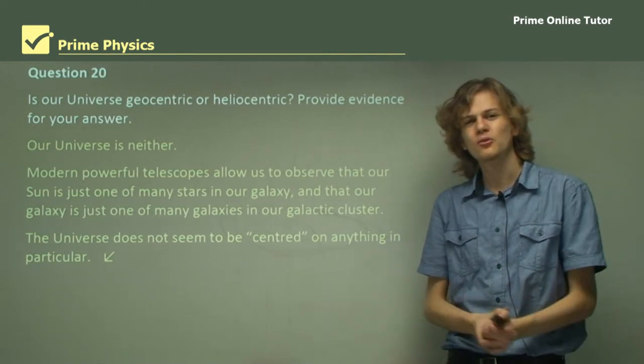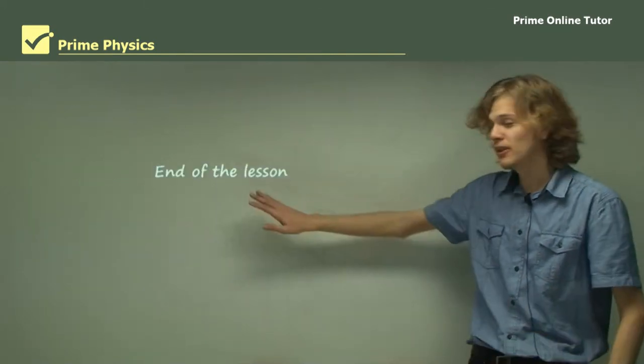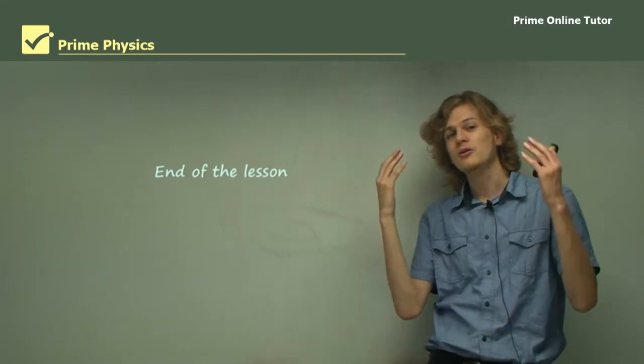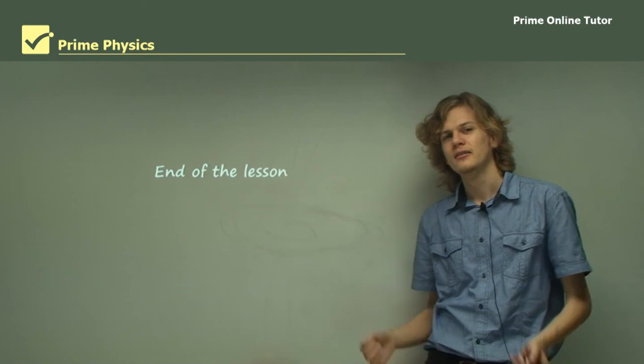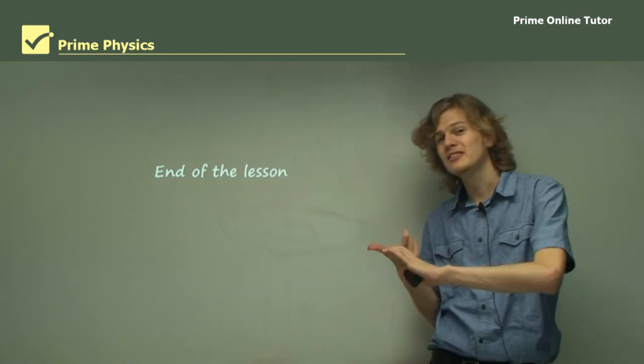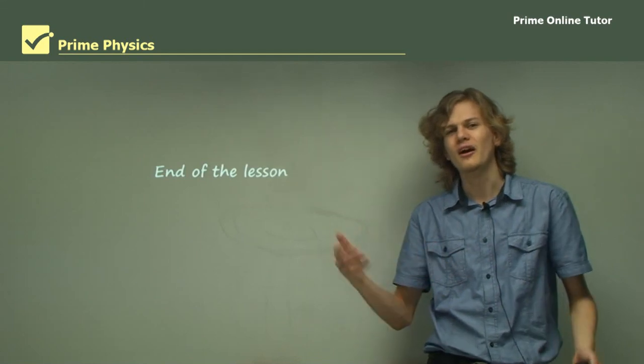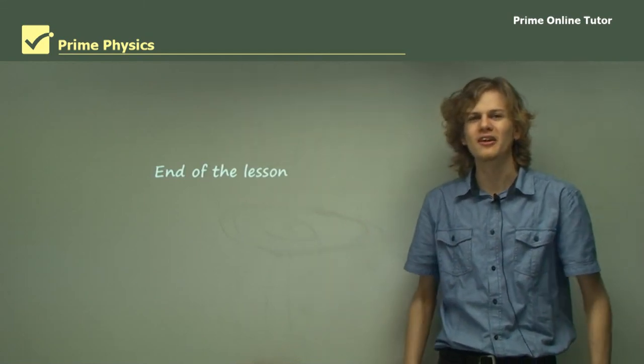All right. Well, that concludes the questions. And it concludes the lesson as well. In this lesson, we've learned about our current understanding of the universe. How it began. The things that we do understand and the things that we don't. And a little about how it differs from older versions of the understanding of the universe.